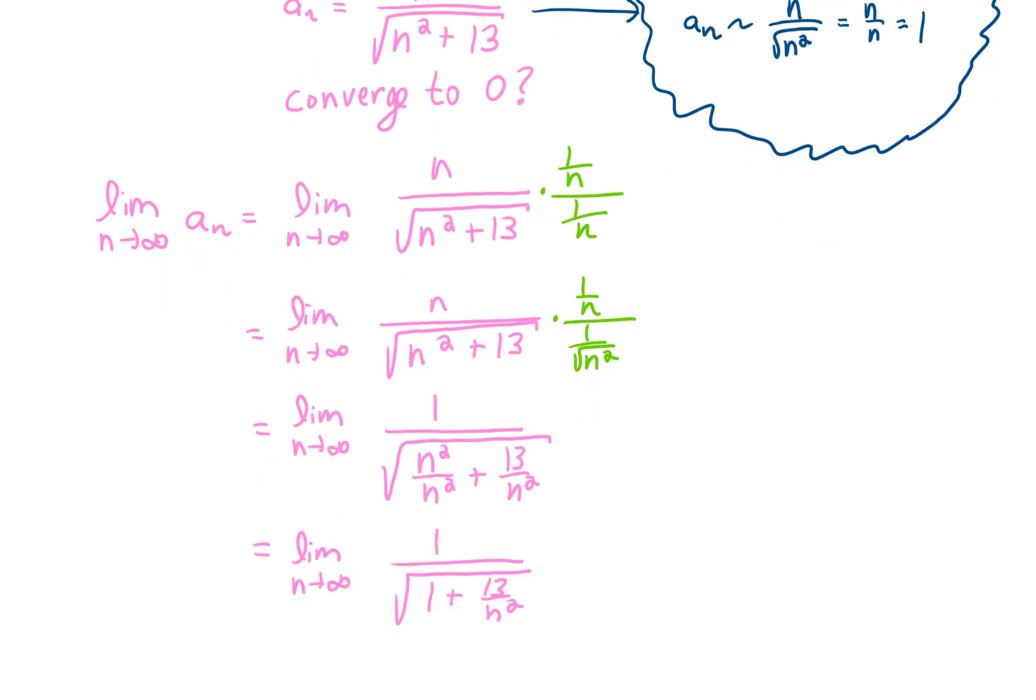We're at a point now where if we take the limit as n goes to infinity, we simply get one over the square root of one, which is just one.